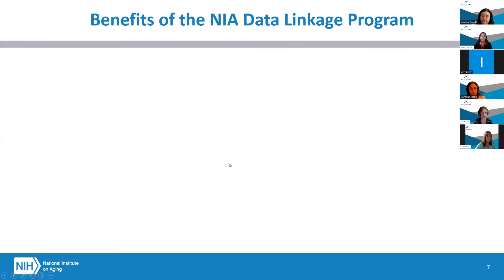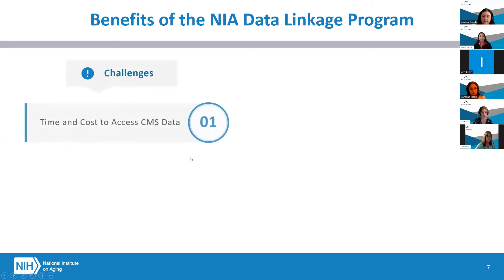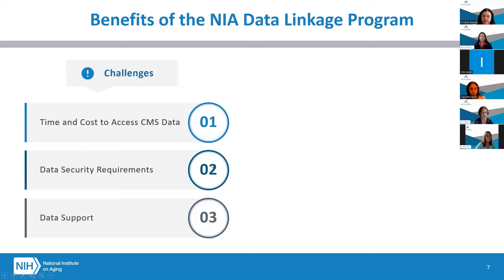As researchers, we understand that data drives discovery. However, obtaining various data from CMS to enhance research is time-consuming and costly, and using the data requires a secure environment, making it out of reach for many health and aging researchers. Since the 2021 start of the NIA Data Linkage Program to address these very challenges, researchers can now access significant linked data sets when studying the health and characteristics of the aging population.